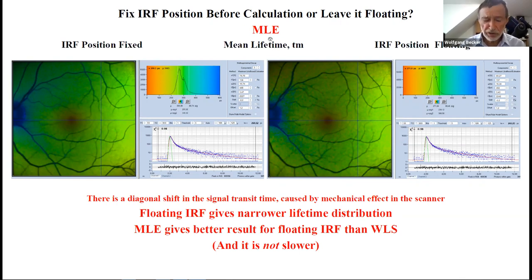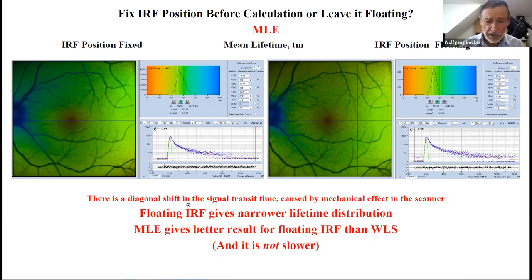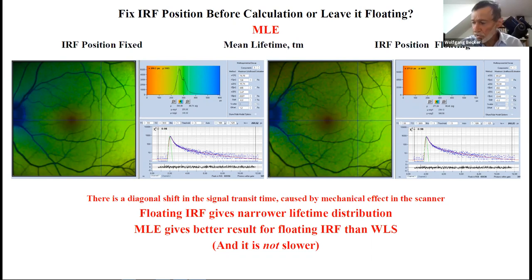The question is: fix the IRF position before calculation or leave it floating? With maximum likelihood estimation, things are different from the least squares fit. Here's the result with IRF position fixed: we see a slight systematic change of the lifetime across the image, and this diagonal shift is just a shift in the transit time caused by a mechanical effect somewhere in the scanner. Since this is a medical instrument with approbation, we can't simply make changes to it.